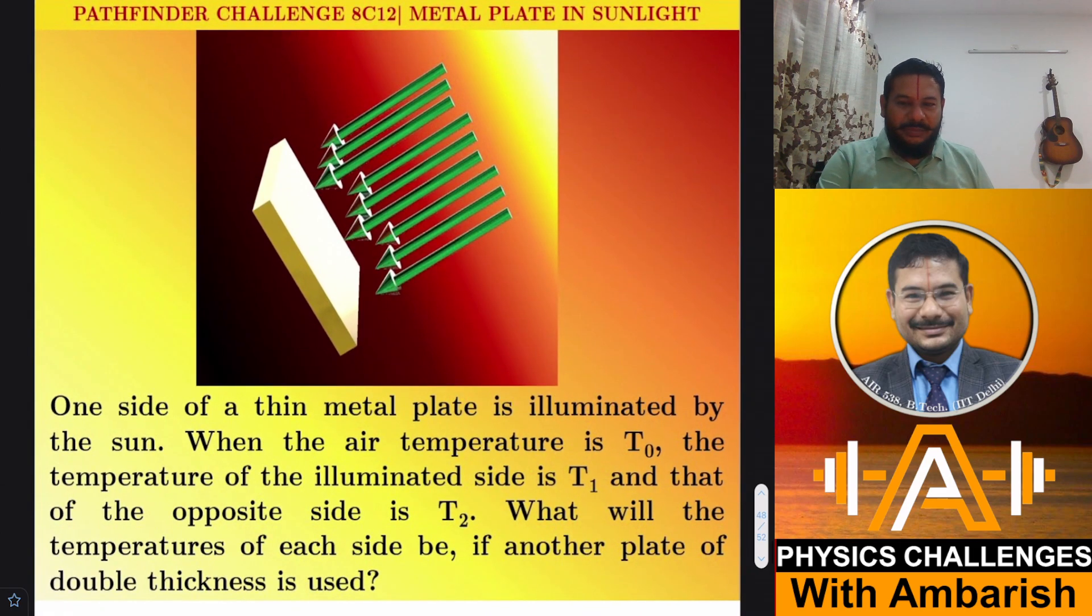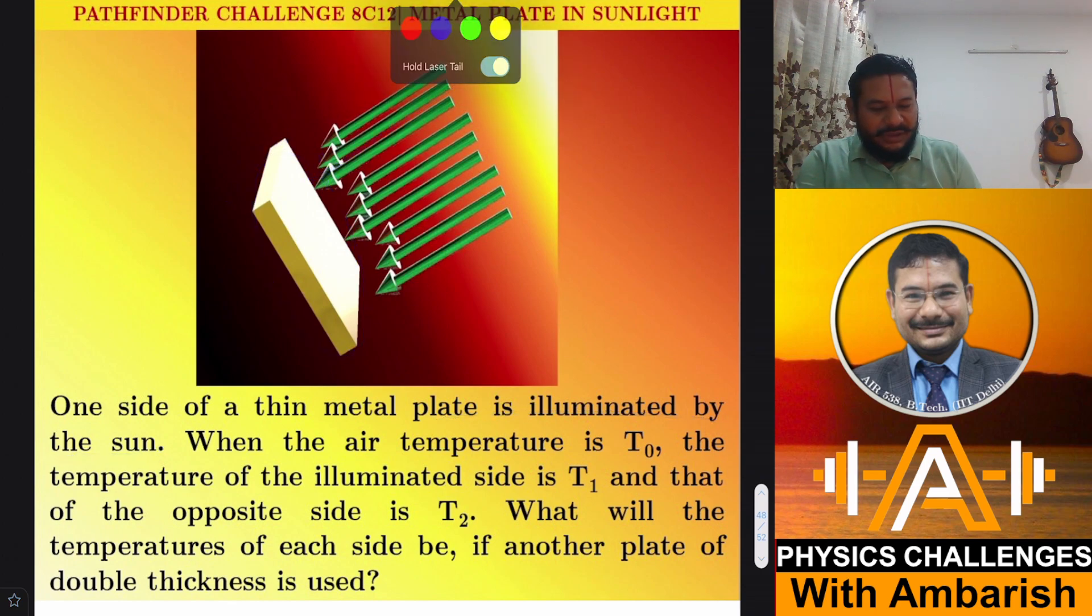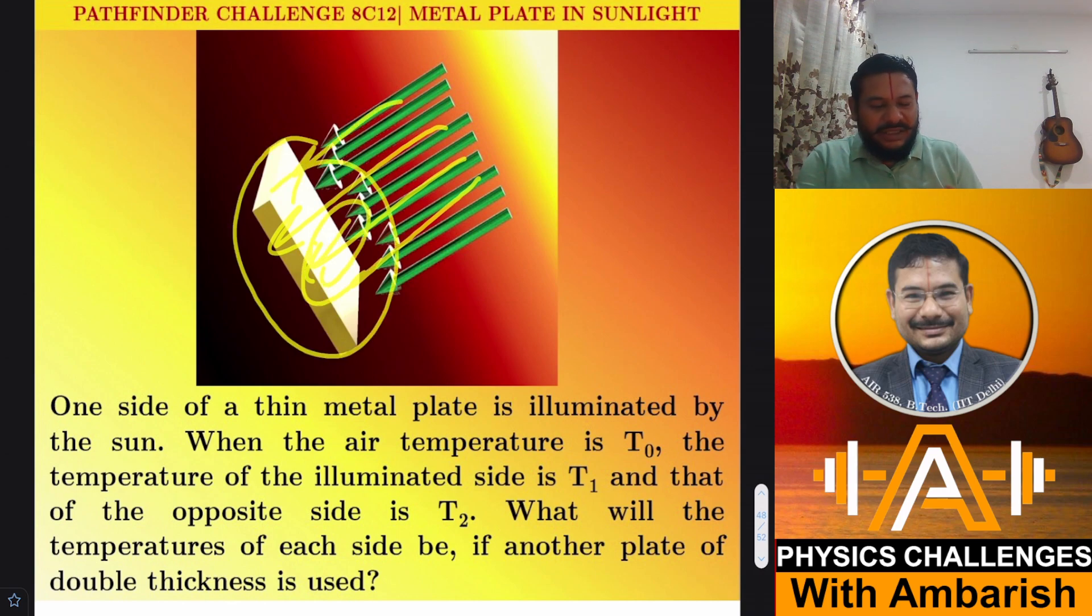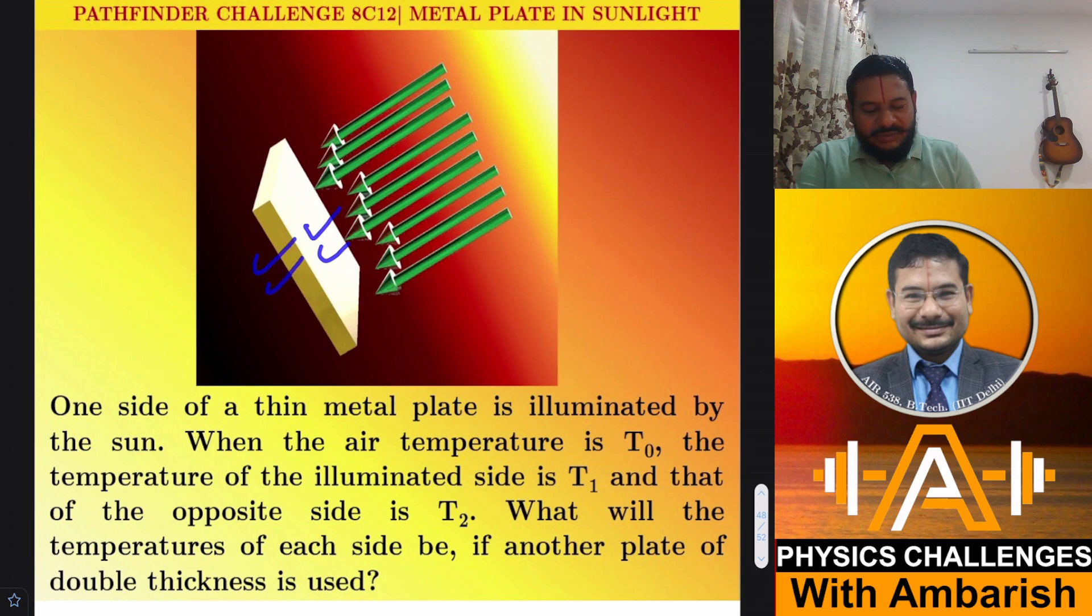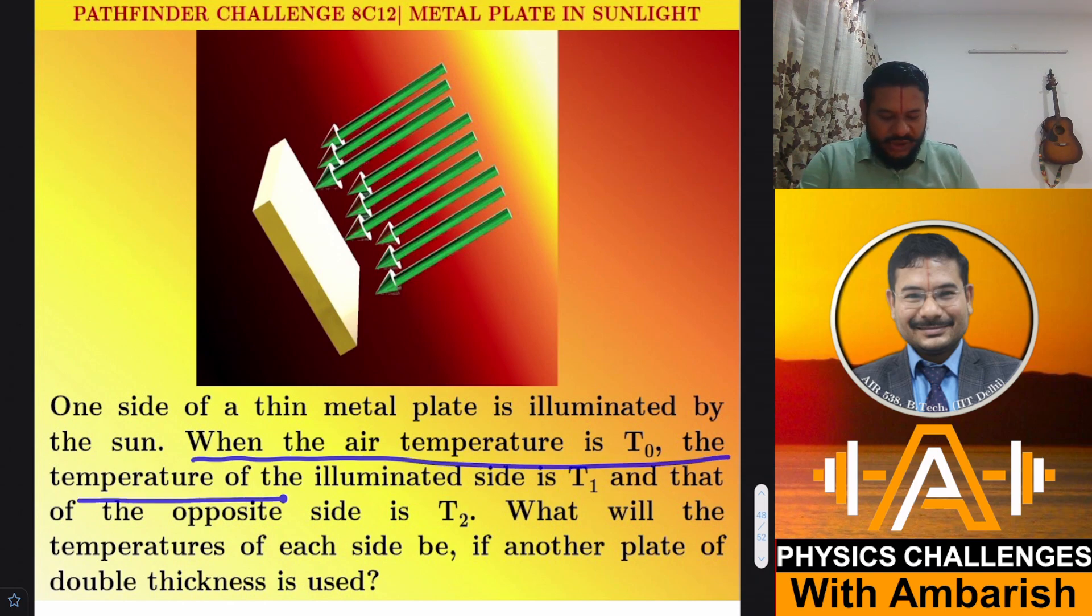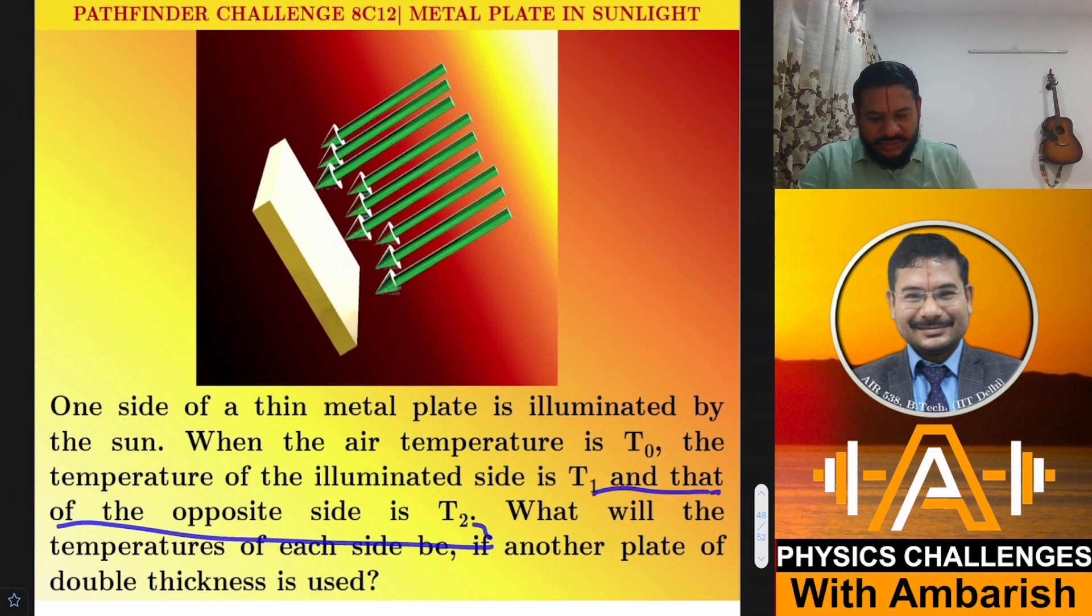One end of a thin metal plate is illuminated by the sun. So this is a metal plate and sunlight is coming from here. The sunlight is falling on this like this. And then the upper surface will attain some temperature and the lower surface will attain some temperature. So we have to comment on the temperature.